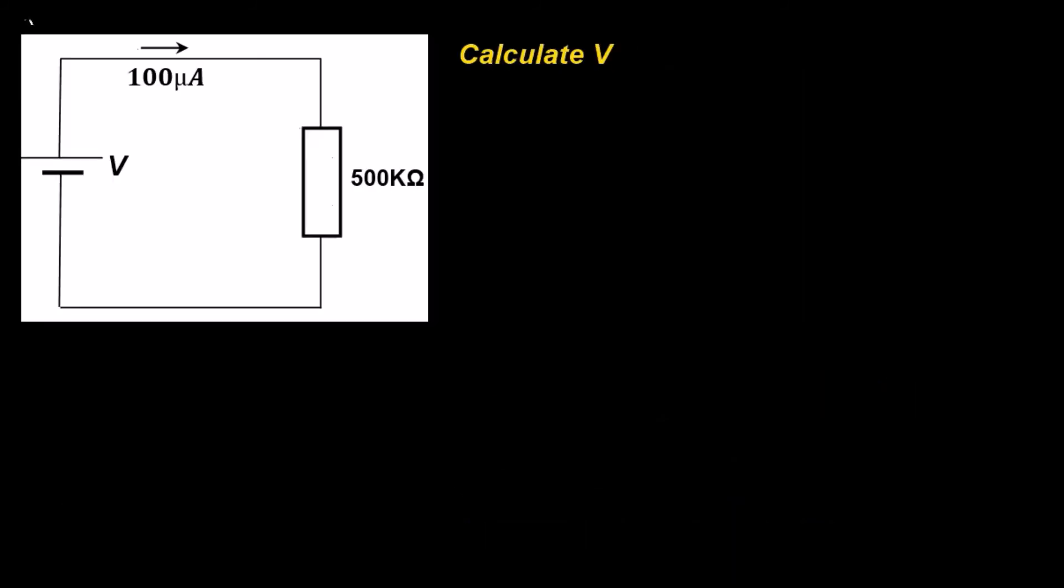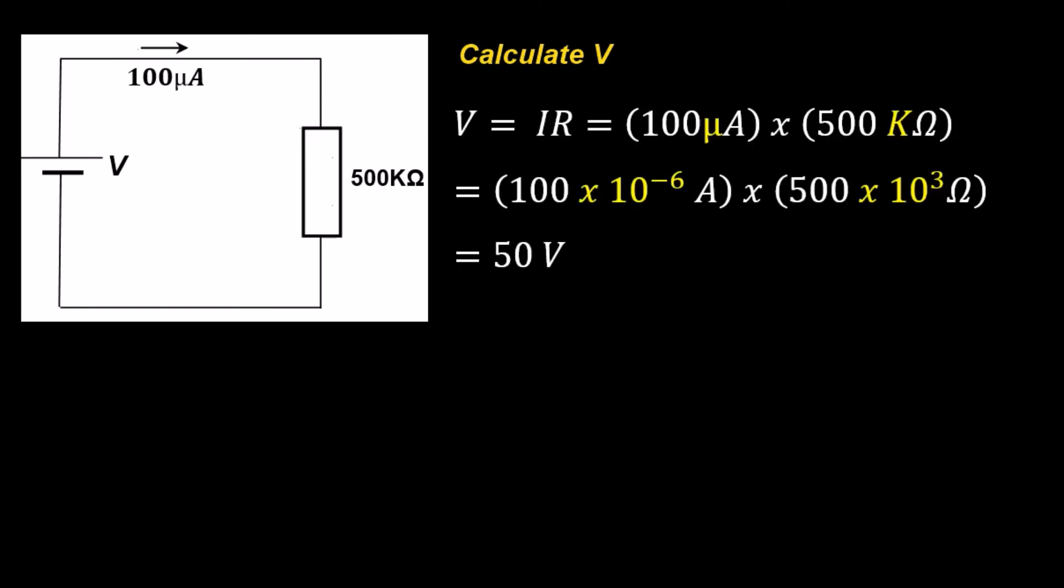Another example here. So here we have the current in micro-amps, and we have resistance in kilo-ohms. So how do we put that in our calculator? So voltage, this is Ohm's law. Voltage is current times resistance. So 100 micro-amps times 500 kilo-ohms. Remember, we can't put micro and kilo directly into our calculator.